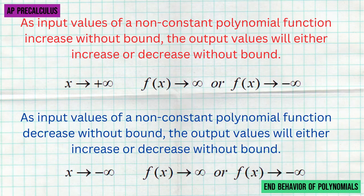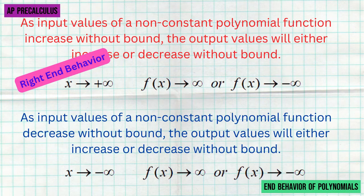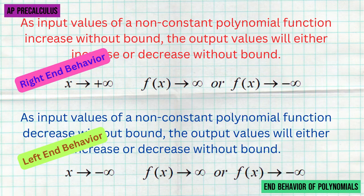When we talk about input values increasing without bound, we're talking about what we call right end behavior — we're looking at x going towards positive infinity. And when we talk about x going towards negative infinity without bound, we're talking about the left end behavior of the function. The right end behavior addresses what the function is doing as x goes towards infinity, and the left end behavior addresses what happens as x goes towards negative infinity.